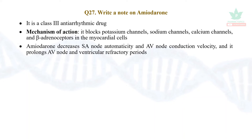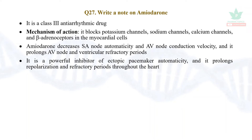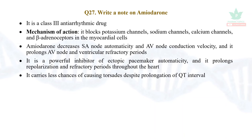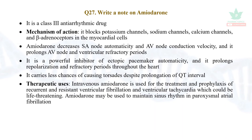Amiodarone takes more time to conduct through the AV node. It is a powerful inhibitor of ectopic pacemaker activity — any region of the heart other than the SA node that generates automatic impulses is called ectopic pacemaker activity. It carries less chance of prolonging the QT interval. Therapeutic uses: intravenous amiodarone is used for treatment and prophylaxis of recurrent and resistant ventricular fibrillation and ventricular tachycardia, which could be life-threatening.